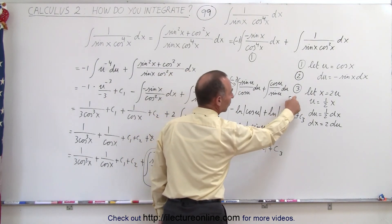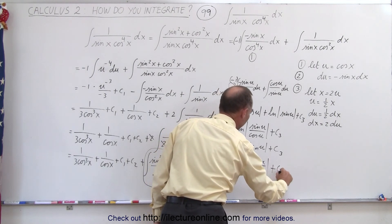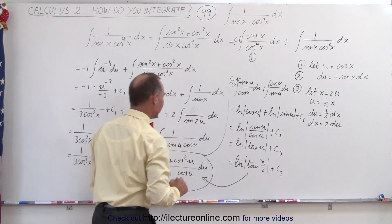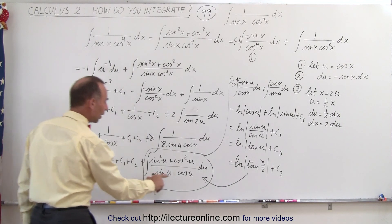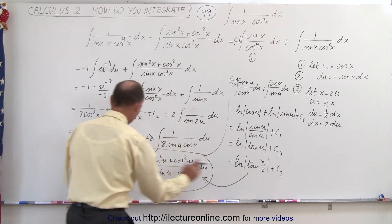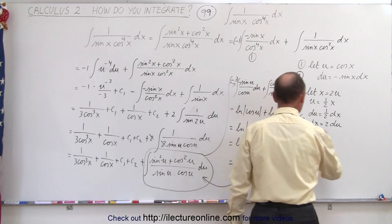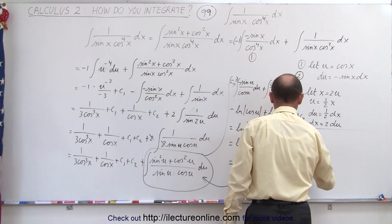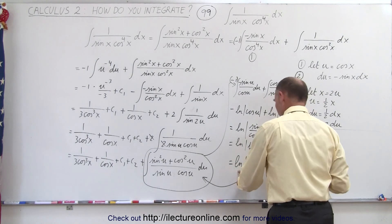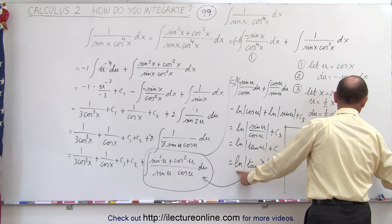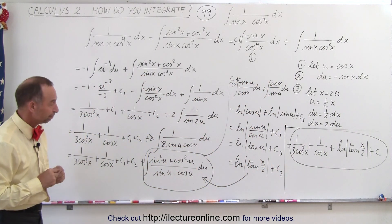Since u for the third integral was equal to one-half x, this becomes the natural log of the tangent of x over 2 plus c3. So the final answer is one over three times cosine cubed of x, plus one over cosine of x, plus the natural log of the tangent of x over 2, plus C — combining c1, c2, and c3 into a single constant of integration. And that is the final result of that particular integral.